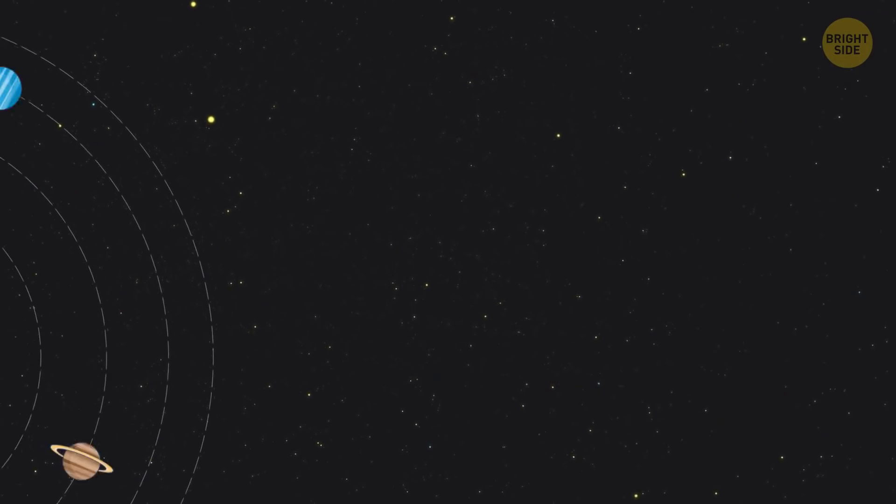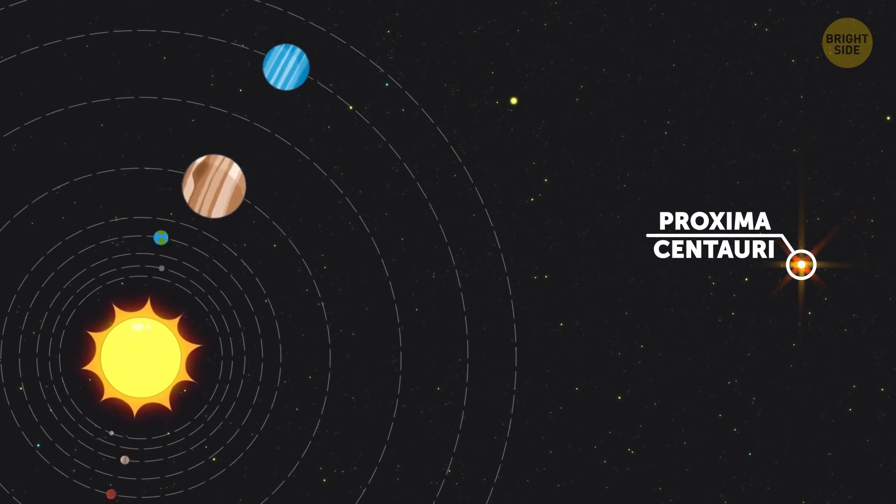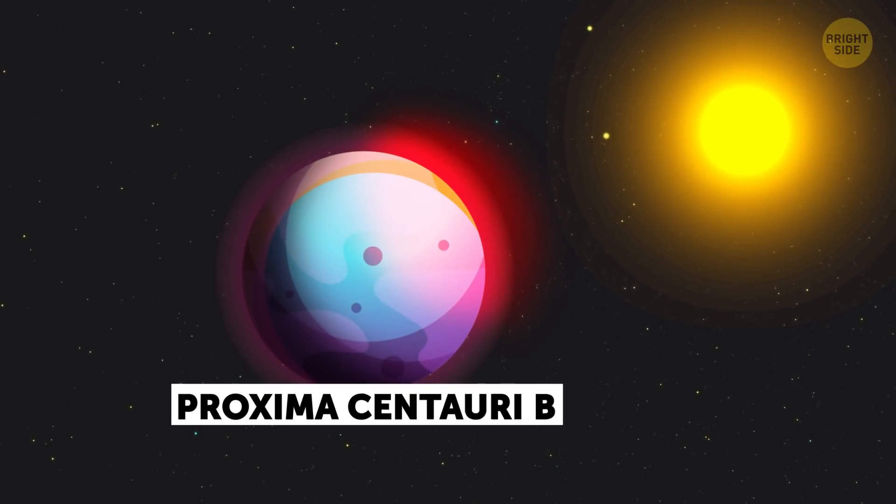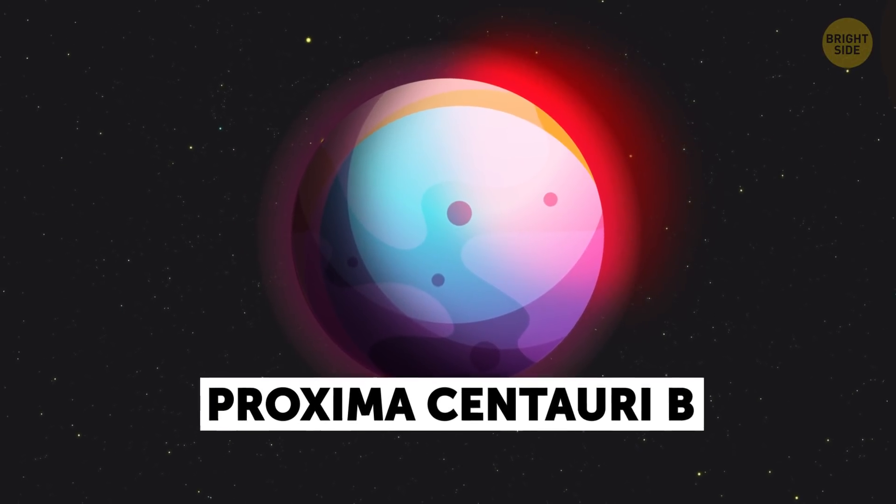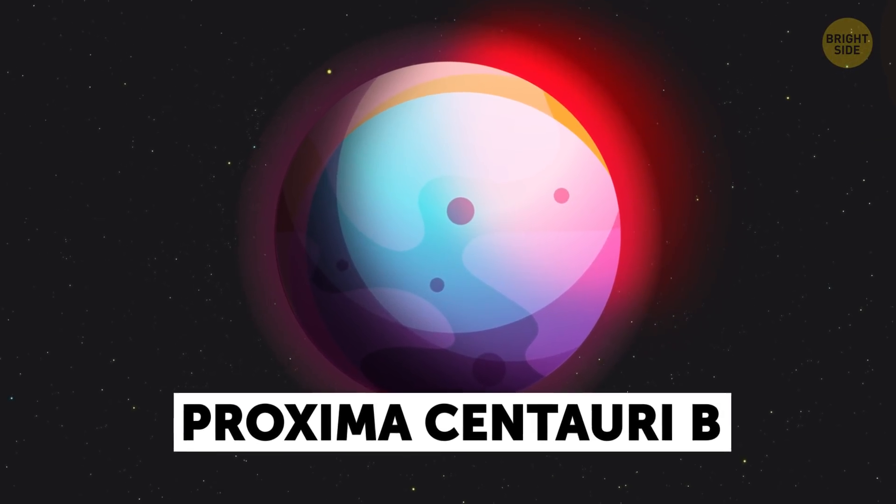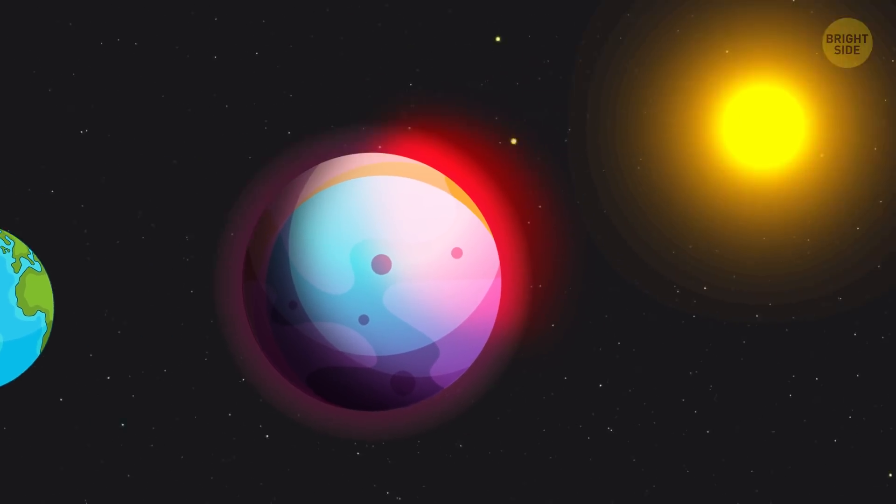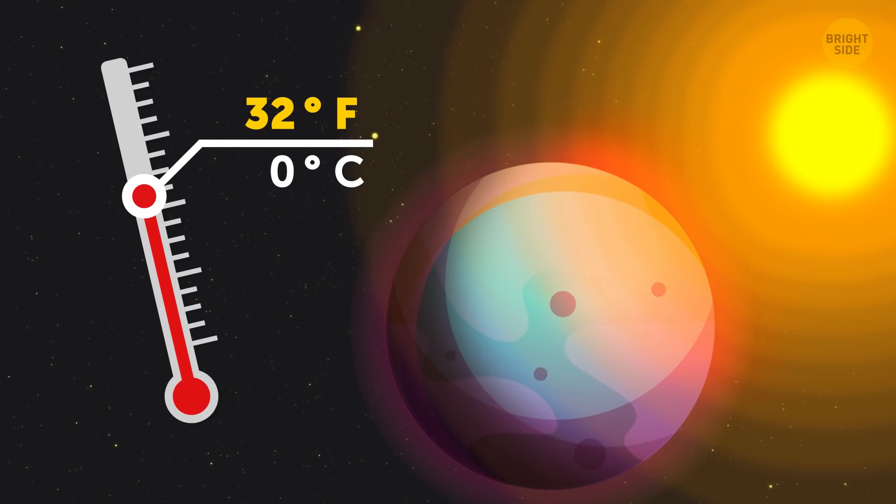Actually, one of them is right in our neighborhood. Remember Proxima Centauri? You know, our sun's closest neighbor star? Well, it's got a planet of its own called Proxima Centauri B. Lengthy name, but we can work on rebranding it if we move there. This planet is actually pretty fascinating. It's slightly bigger than Earth and it receives just enough light from Proxima Centauri to keep temperatures above 32 degrees Fahrenheit.